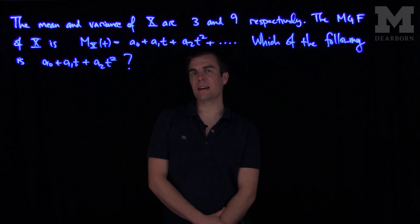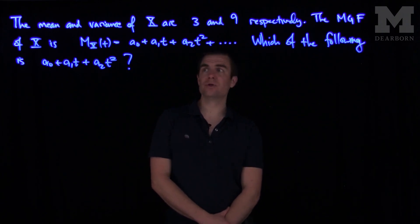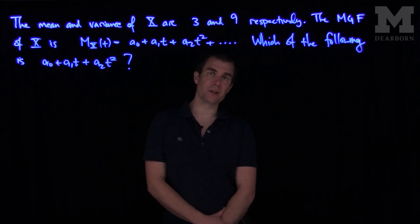In this problem, we're given that the mean and variance of X are 3 and 9 respectively. The moment generating function for X is given by this series a₀ + a₁t + a₂t² + ... Which of the following is a representation of this quadratic polynomial a₀ + a₁t + a₂t²?